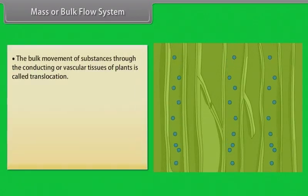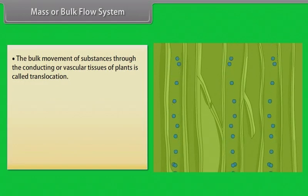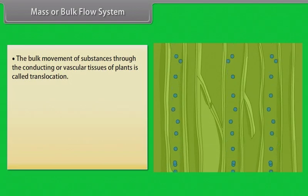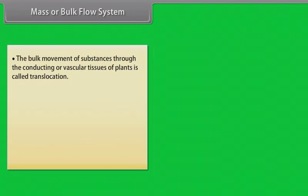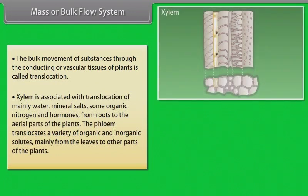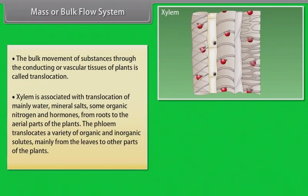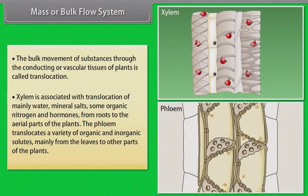The bulk movement of substances through the conducting or vascular tissues of plants is called translocation. The higher plants have highly specialized vascular tissues: xylem and phloem. Xylem is associated with translocation of mainly water, mineral salts, some organic nitrogen and hormones from roots to the aerial parts of the plants. The phloem translocates a variety of organic and inorganic solutes, mainly from the leaves to other parts of the plants.